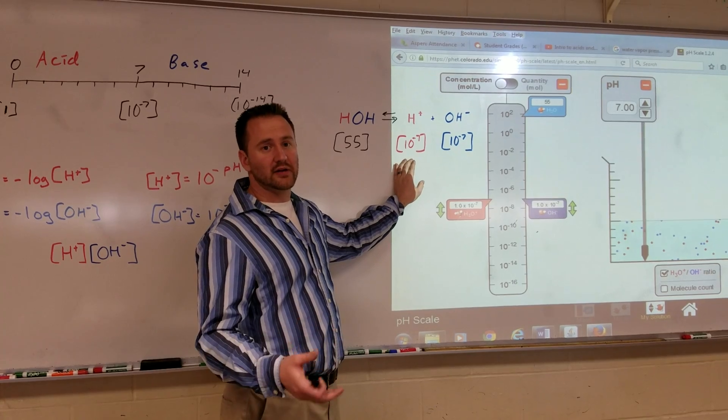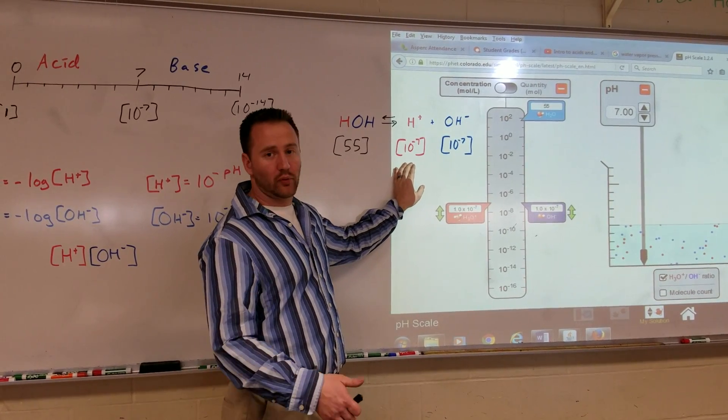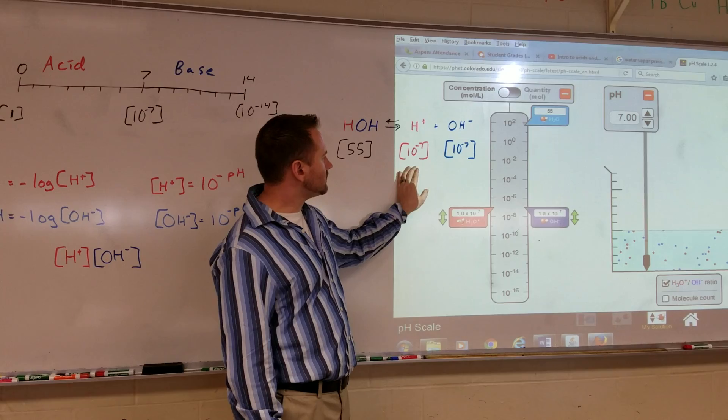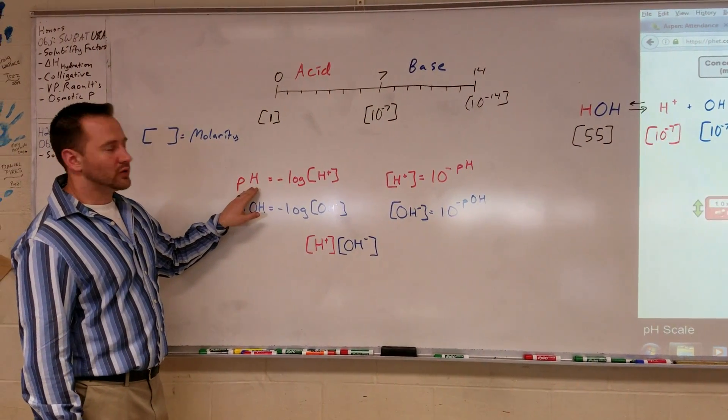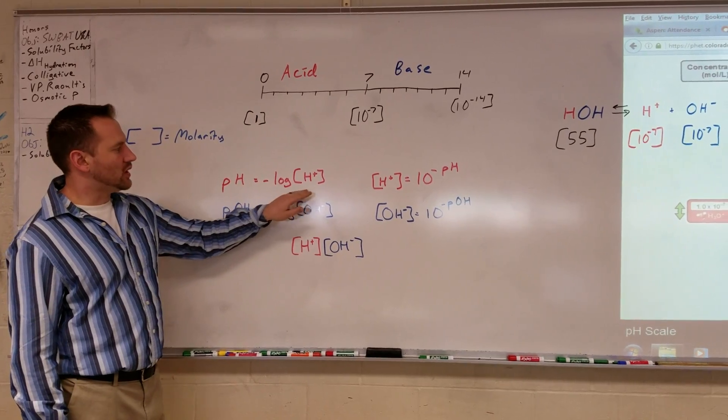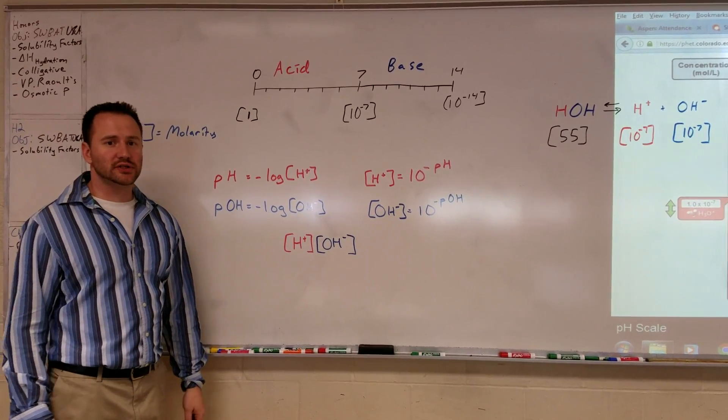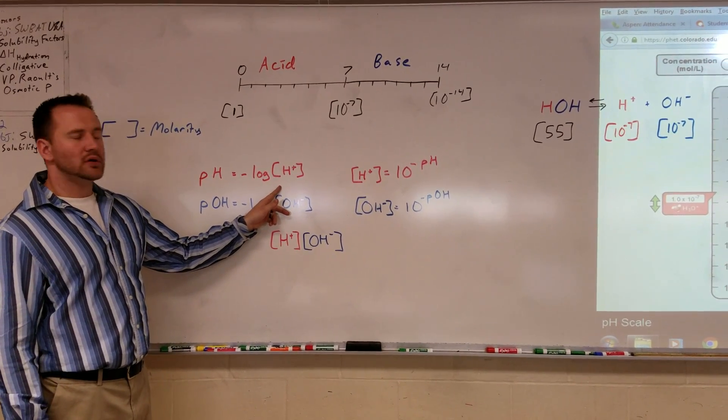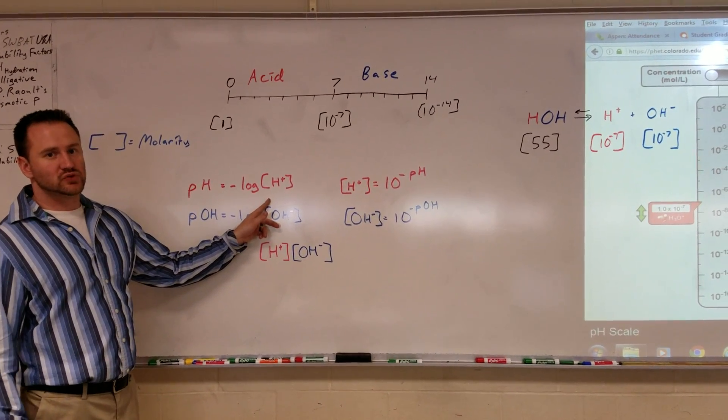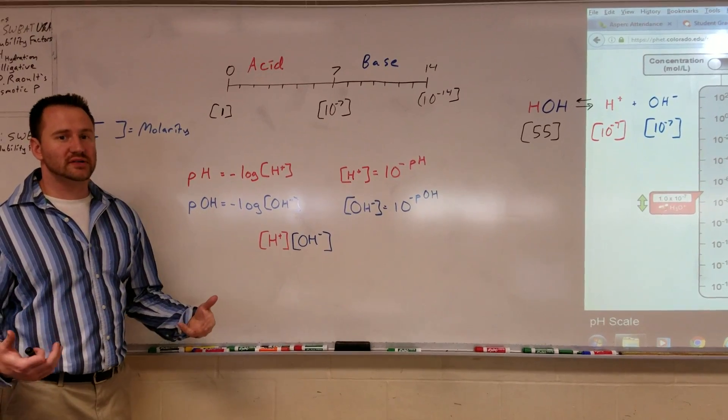So that means the molarity is 10 to the negative 7, which is 0.00...01. The pH is the negative log of the hydrogen ion concentration. So if you took the negative log of 10 to the negative 7, that would be 7. So the pH of neutral water is 7.